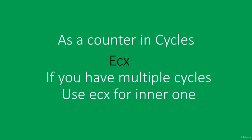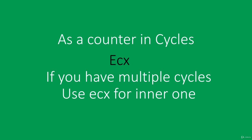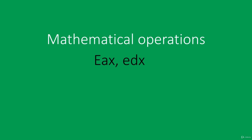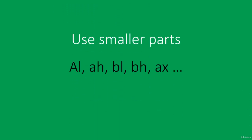As a counter in cycles, use ECX. For nested cycles, use ECX for the inner cycle and any other register for the outer cycle. For mathematical operations, use EAX, and as an alternative you can use EDX. If you are working only with bytes — for example, the char data type — don't be afraid to use part of a register. That way you save yourself a whole register. You can use variables only if all your registers are full.